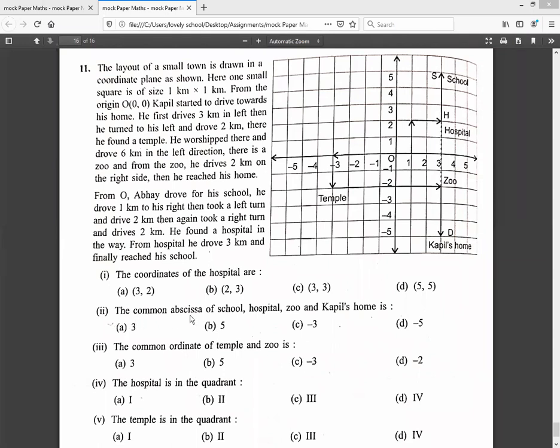Second, the common abscissa of school, hospital, zoo, and Kapil's home is—abscissa means the x-coordinate. See the figure very carefully. You have to tell me the x-coordinate of school, hospital, zoo, and Kapil's home.